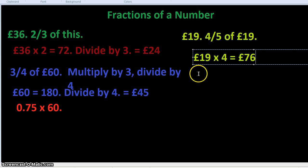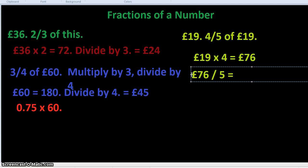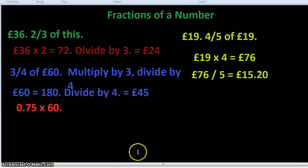Now, divide by 5. So we've got £76 divide by 5 equals £15 and 20 pence, because £1 divided by 5 is 20 pence. So 4/5 of £19 is £15 and 20 pence. And that is how you get a fraction of a number.